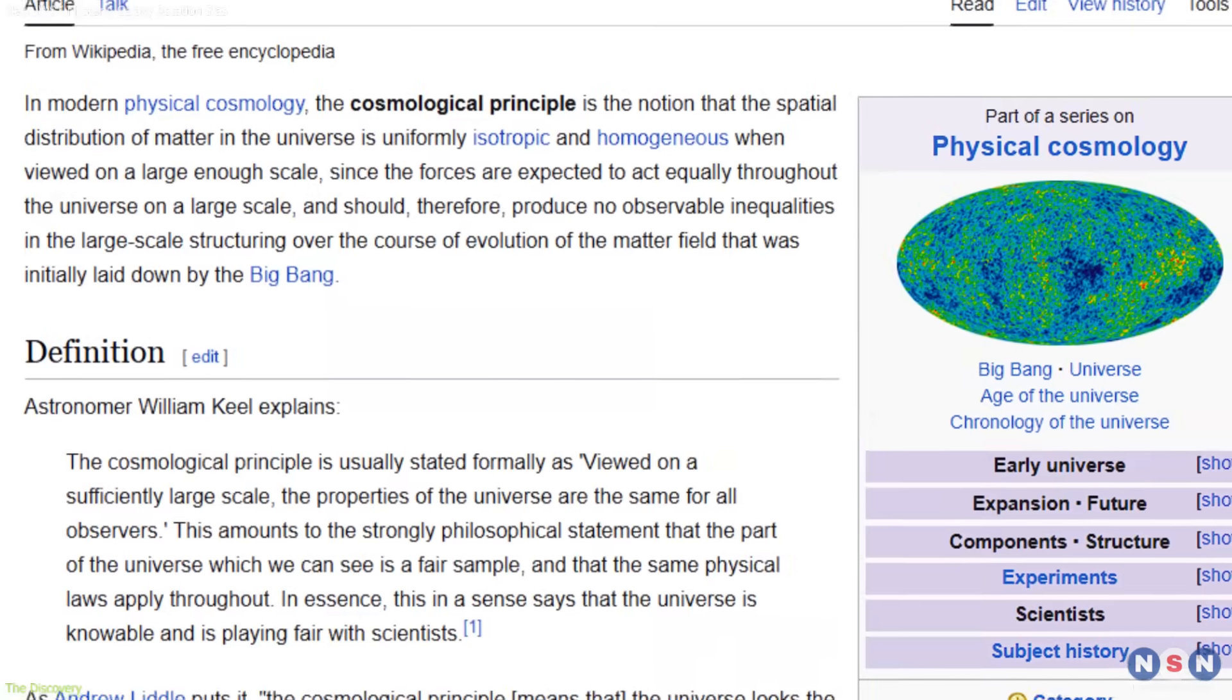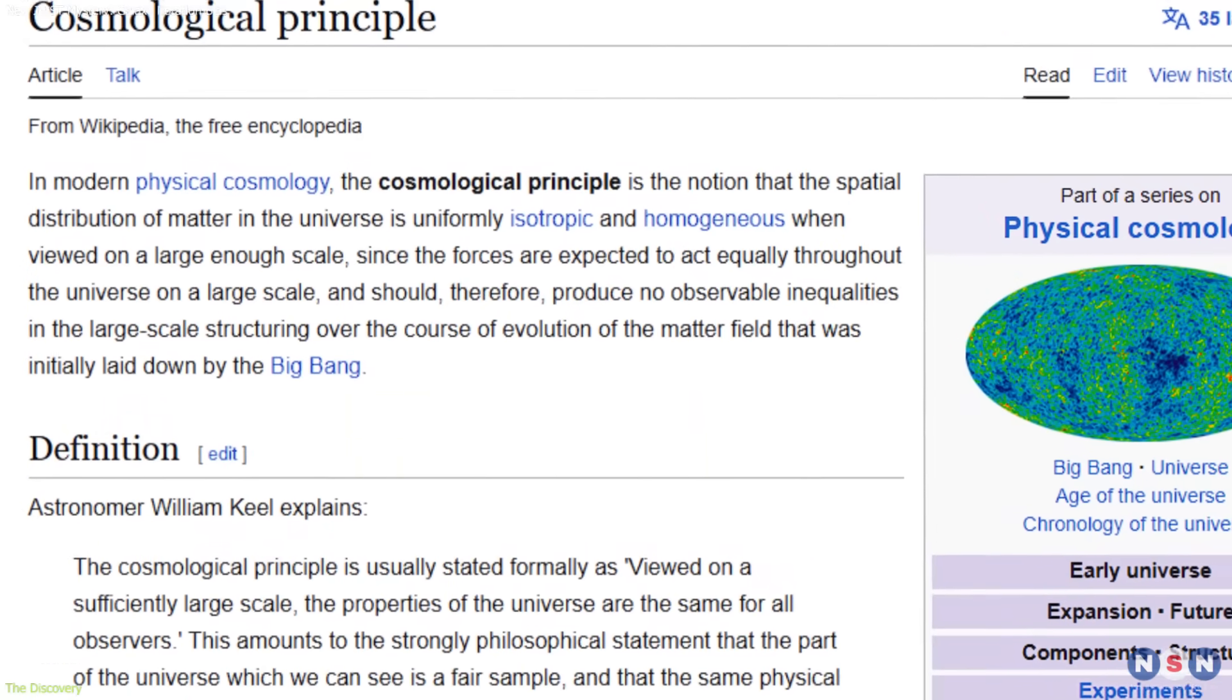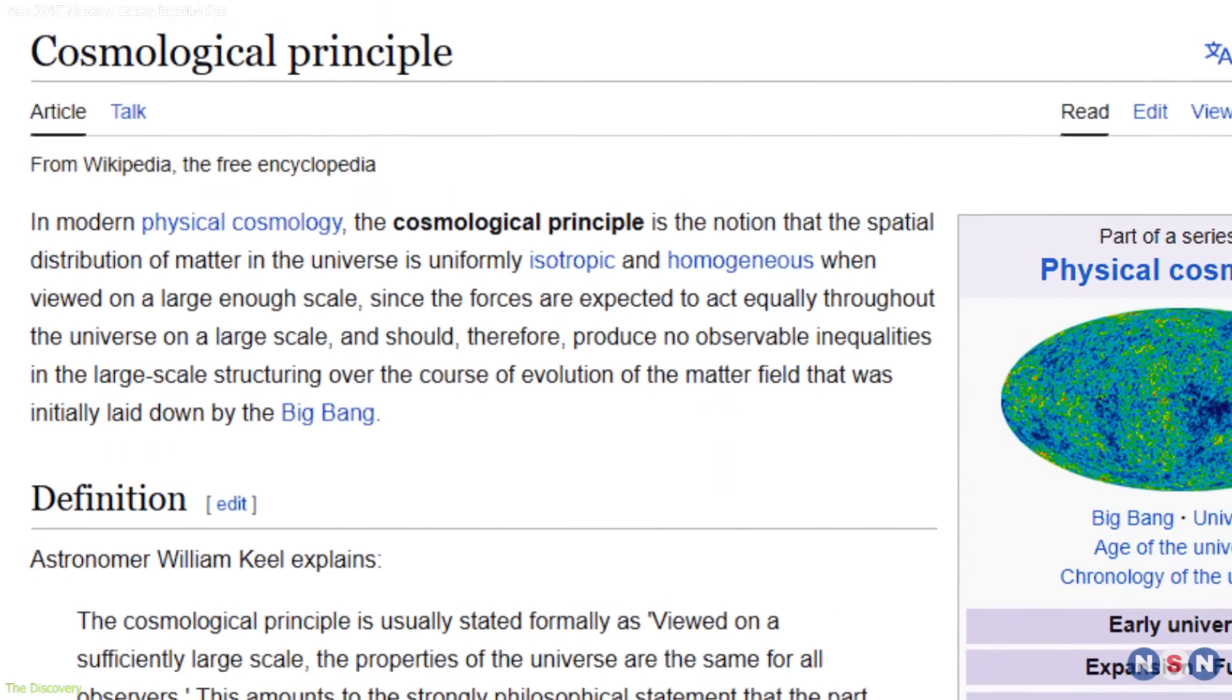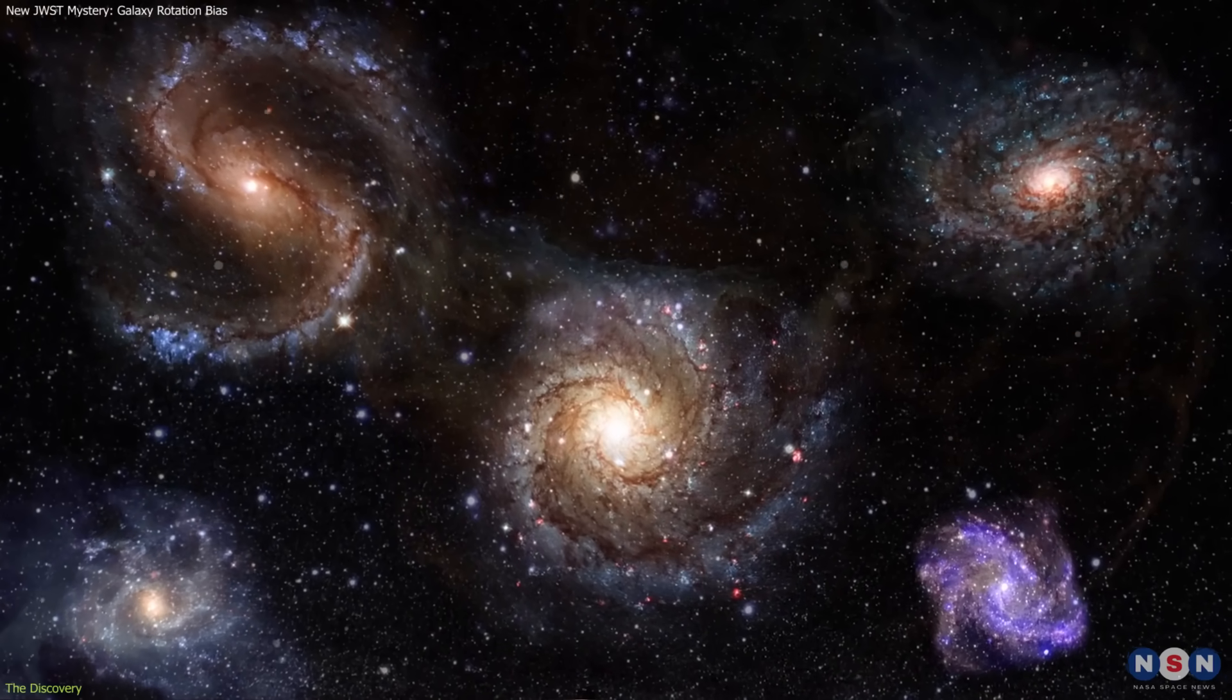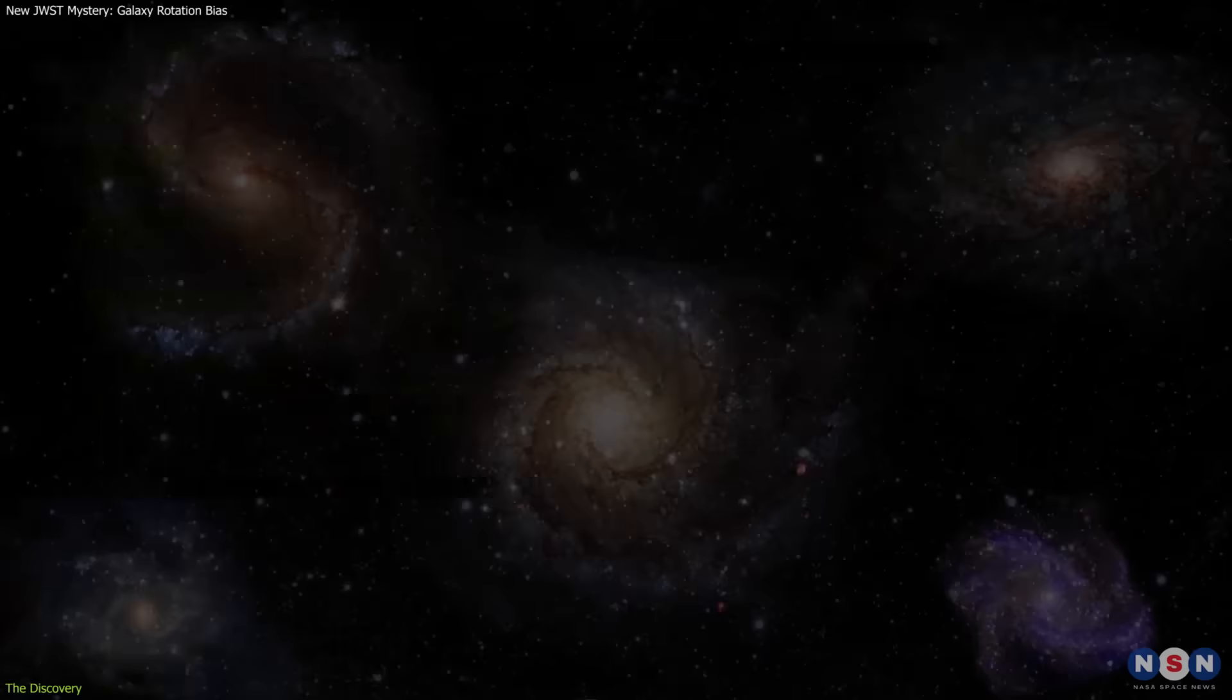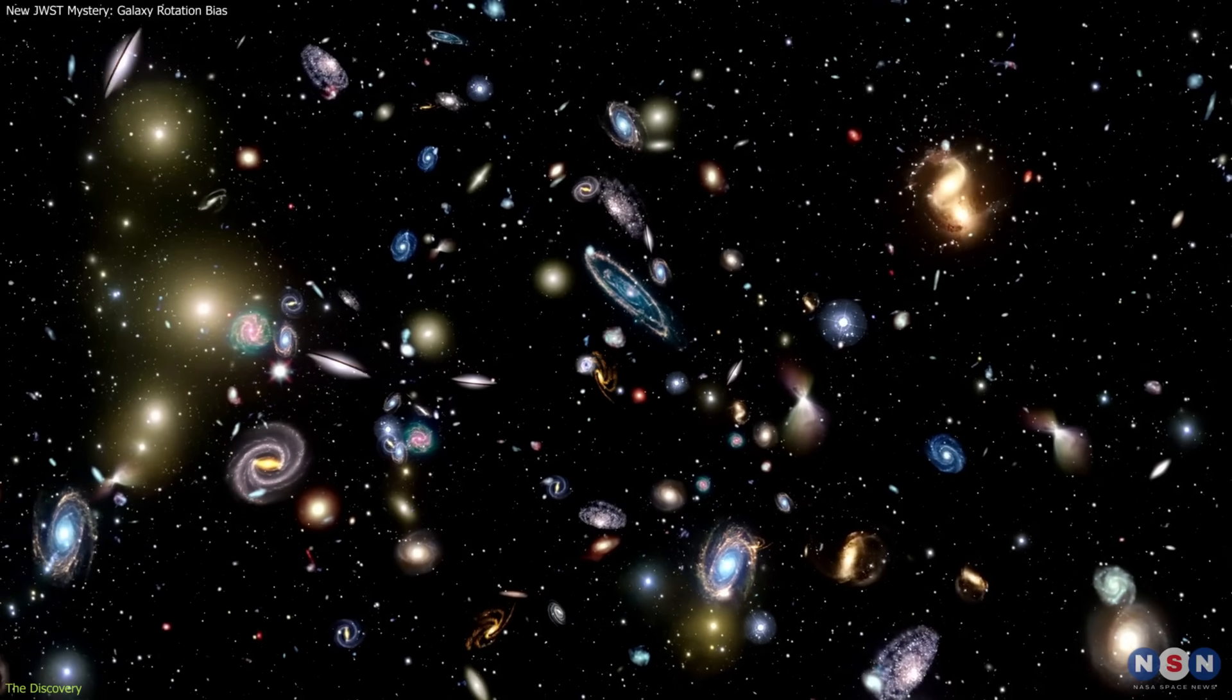According to the cosmological principle, the universe should appear the same in all directions on large scales. That means galaxies should be roughly split between clockwise and counterclockwise spins, with only small variations due to chance.